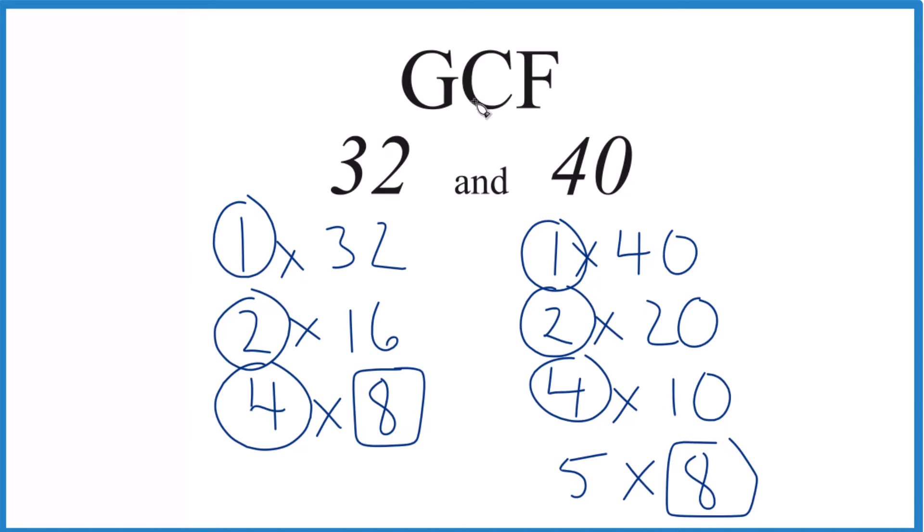So in answer to our question, the GCF for 32 and 40 is 8. You could use another method like prime factorization, but unless you have really big numbers, this is a pretty good method.